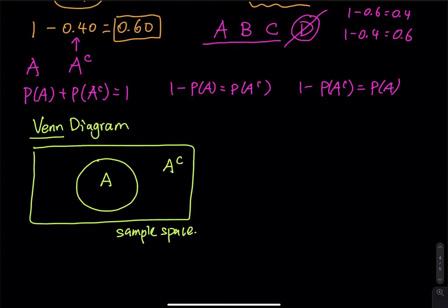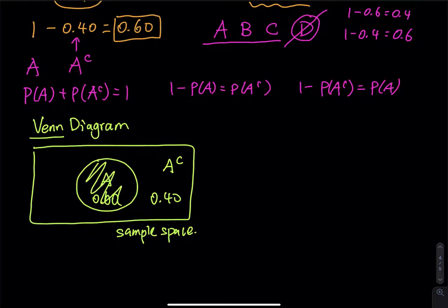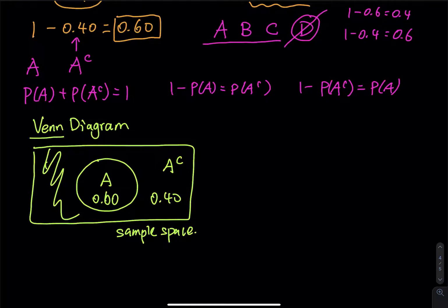Event A is passing — 60%. Not passing is 40%. So 60 plus 40 equals 100%. If you want A^C, take the entire rectangle and remove A. If you want A, take the entire rectangle and remove A^C. That's how you explain complementary events using a Venn diagram.